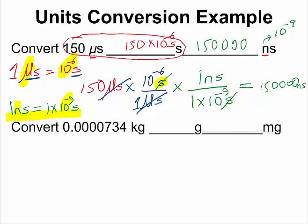Let us take a look at the second example. Here we want to convert from kilograms to grams and then from grams to milligrams. First I'm looking at the relationship between kilogram and gram. I know the meaning of kilo — kilo literally means 10 to the power of 3, which means one kilogram is the same thing as 10 to the power of 3 grams. All I've done is replace kilo with 10 to the power of 3.